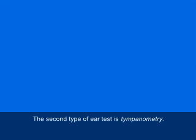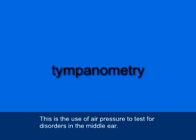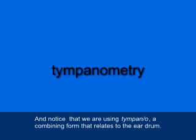A second type of ear test is called tympanometry, T-Y-M-P-A-N-O-M-E-T-R-Y. Tympanometry is the use of air pressure to test for disorders in the middle ear. Notice that we're using tympano, a combining form that relates to the eardrum.